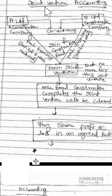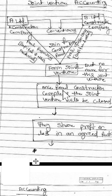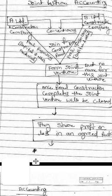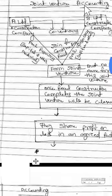Two companies join together to carry out a particular purpose — construction of road. That formation or association is called a joint venture. After completion of that particular activity, their joint venture will be closed. Finally, they share the profit or losses in an agreed ratio. The people who join together in a joint venture are called co-venturers, not partners as in a partnership firm.